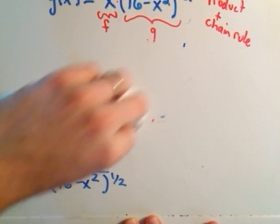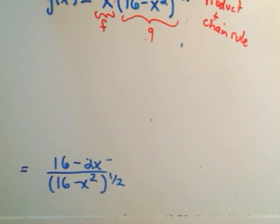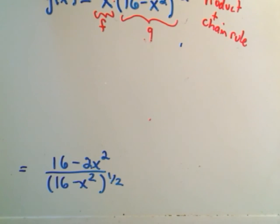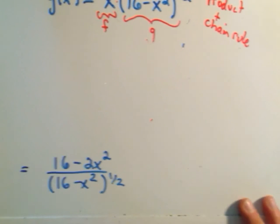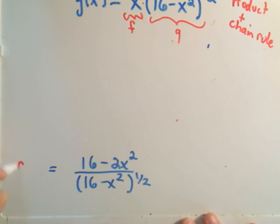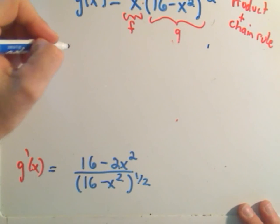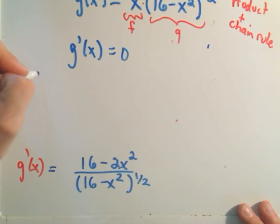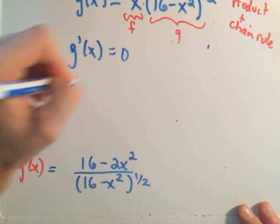So we still have to find our critical numbers. That was, I believe, a 2x squared. Alright, so now this is our derivative, g prime of x. And it says we have to figure out what makes this equal 0. So g prime of x equal to 0. That means we have to set the top part equal to 0.